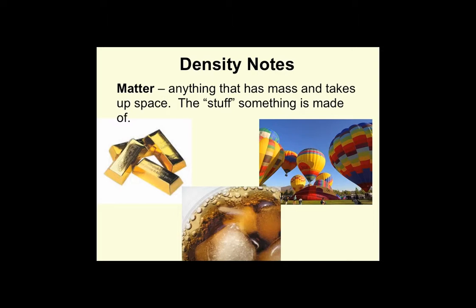In order to understand mass, we need to know what matter is. Matter is defined as anything that has mass and takes up space. It's like the stuff that something is made out of. Gold is a form of matter. Dipepsi is a form of matter. Helium gas is a form of matter.